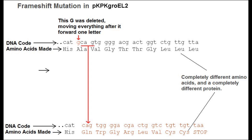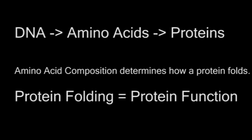This results in every single amino acid following the mutation being completely different. So instead of having this gene produce a protein made of histidine, alanine, valine, glycine, etc., it now makes a protein made of glutamine, tryptophan, glycine, and arginine, and so on. Note that this is a completely different protein from the original gene's product. The amino acids that a protein is made of determines how it folds and completely determines its function. Thus, changing the amino acid sequence in a protein gives it a completely different function.